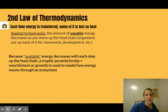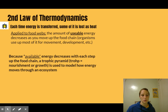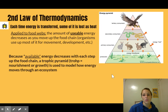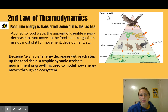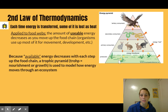Because available energy decreases with each step up the food chain, you have a trophic pyramid. Trophic just means nourishment or growth, and we use this trophic pyramid to model how energy moves through an ecosystem. It's also called an energy pyramid — essentially they show us the same thing.